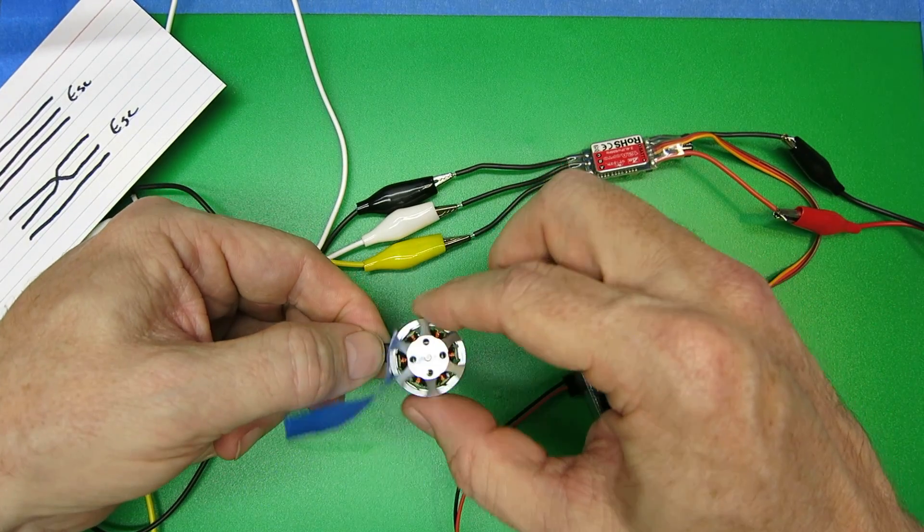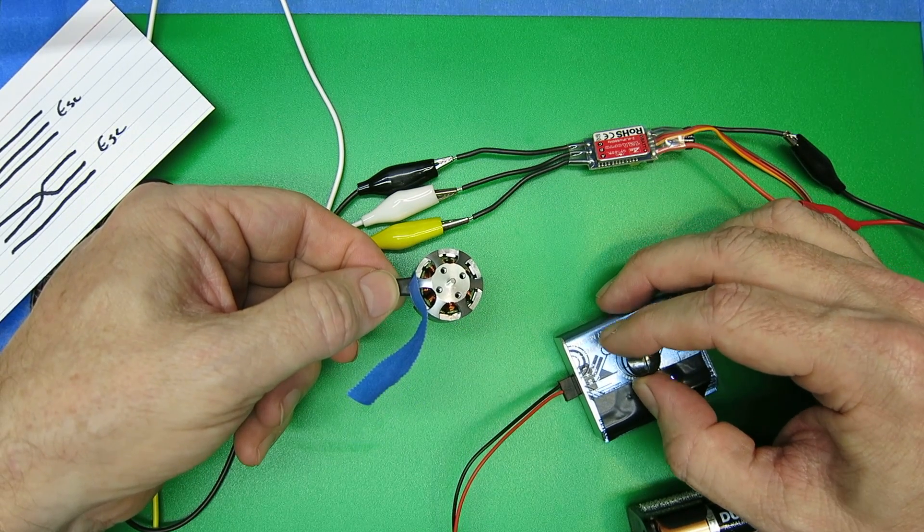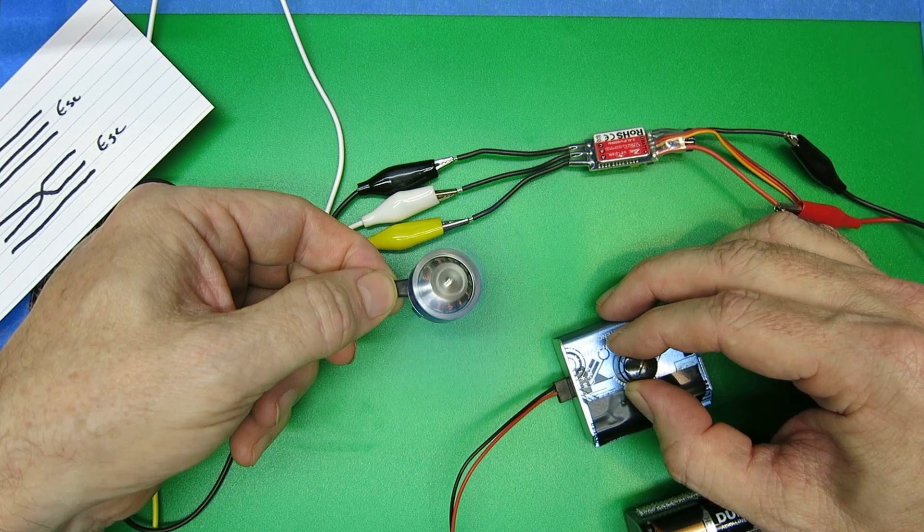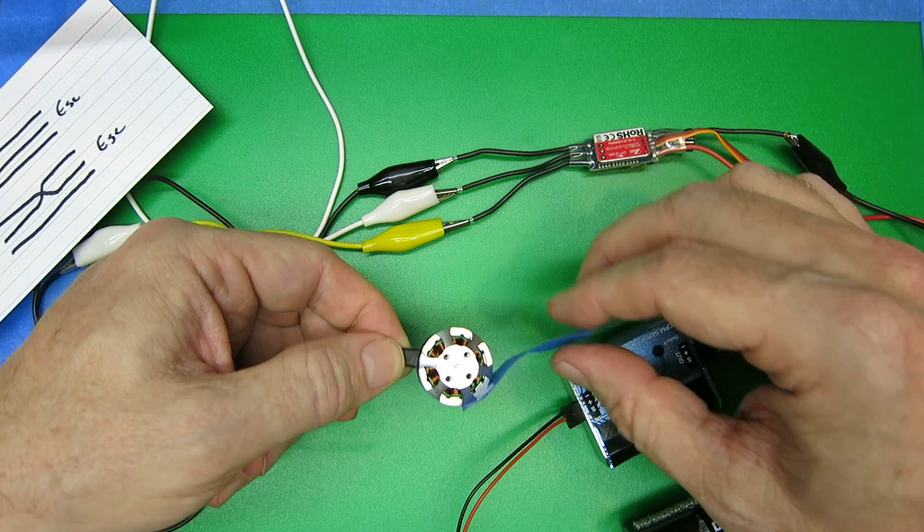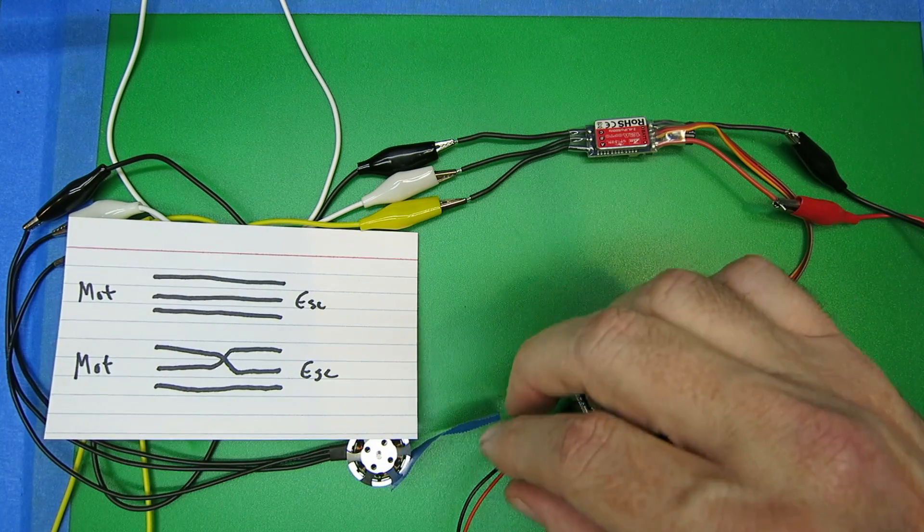I'll put a piece of tape on the motor just so we can see the direction a little bit easier. I'm going to spin it up. And that's going clockwise. So without any cross wires, it's going clockwise.